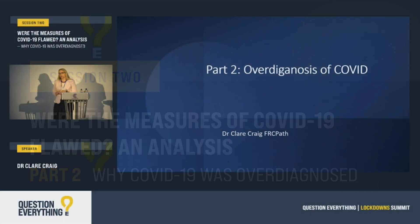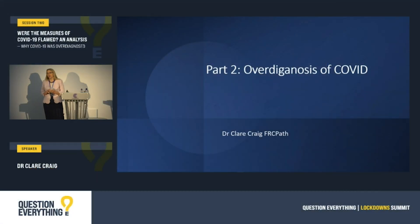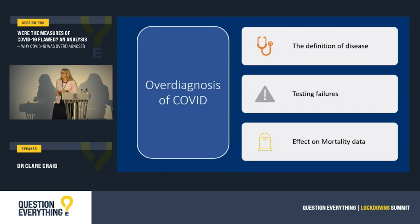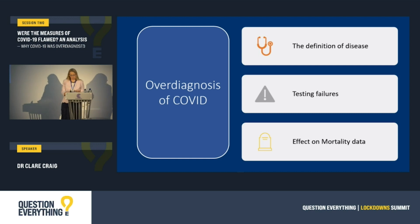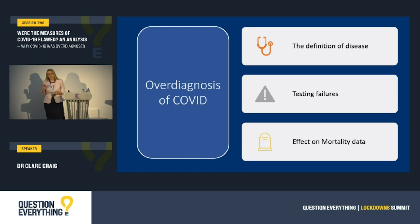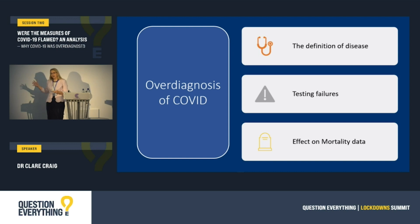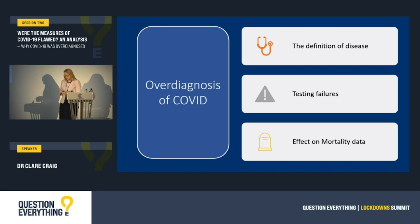I want to talk about how we have over-diagnosed COVID. COVID has been over-diagnosed because of bad diagnosis. We've had a poor case definition, which has resulted in people who are healthy being called cases. There have been errors in the test results themselves, which have inflated the figures, and both of these have impacted on the mortality figures, exaggerating the numbers who died.